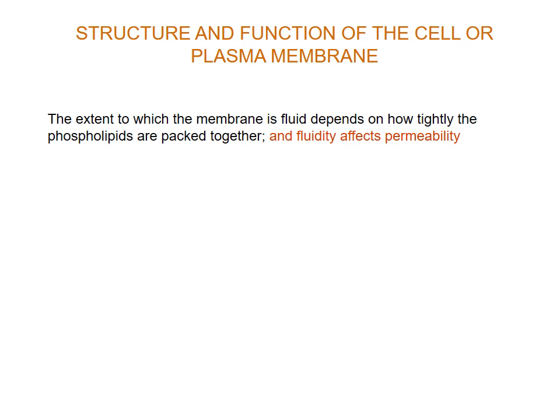The extent to which the membrane is fluid depends on how tightly packed these phospholipids are together. This fluidity affects permeability, or what can come in and out of the cell. Cell membrane permeability — what is allowed in and what is allowed out — is affected by two main factors, and we'll go through each of these.